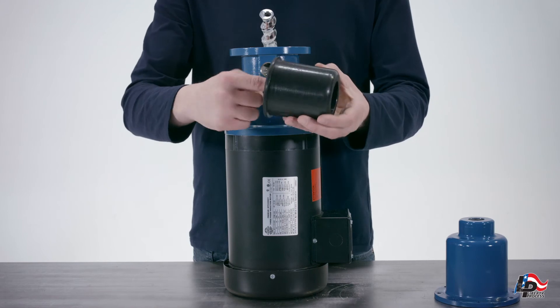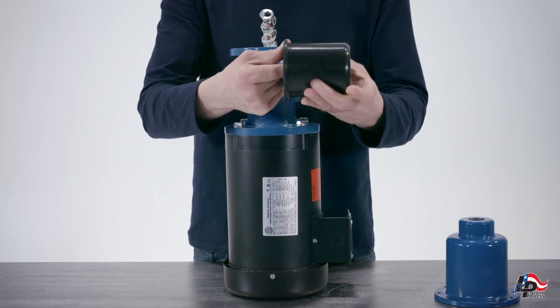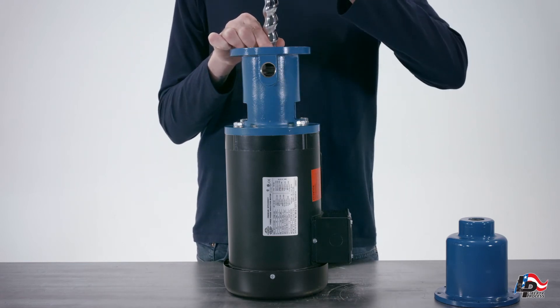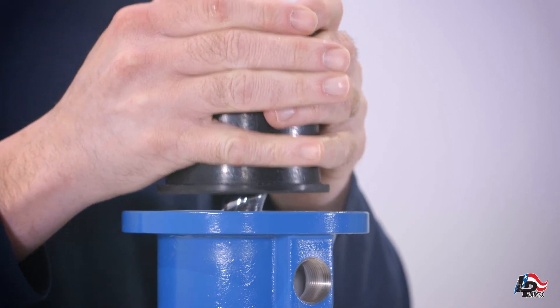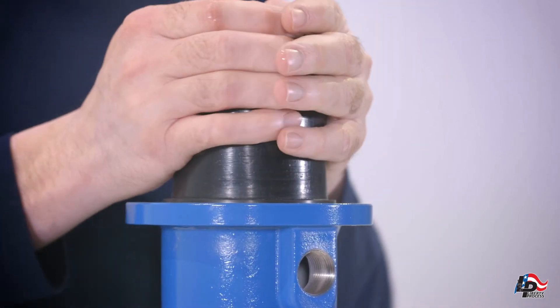Lubricate the rotor and interior of the stator with liquid hand soap. Slide the stator open side down onto the rotor and push down. The stator will seat itself into the channel on the discharge casing and will act as a seal.